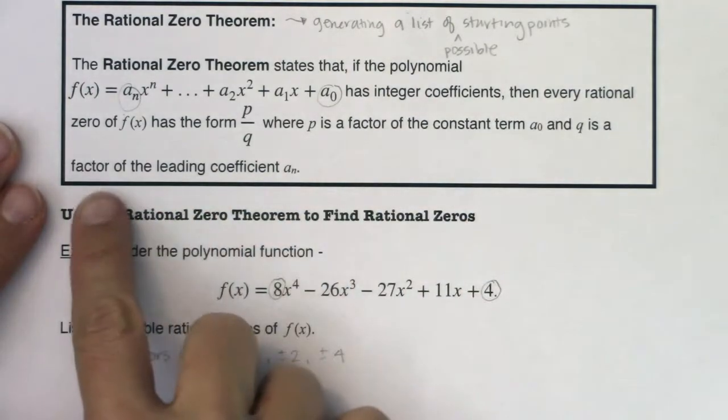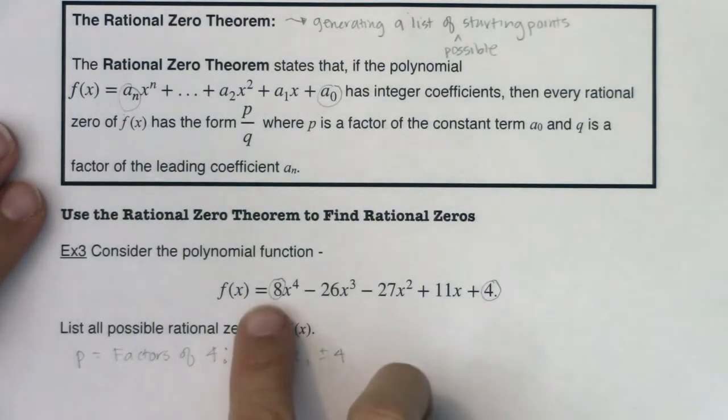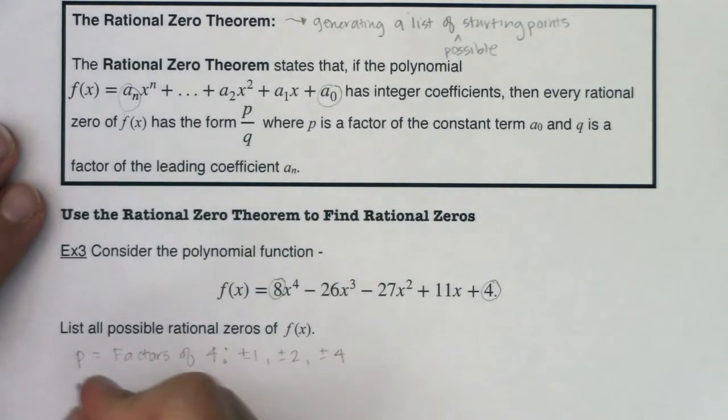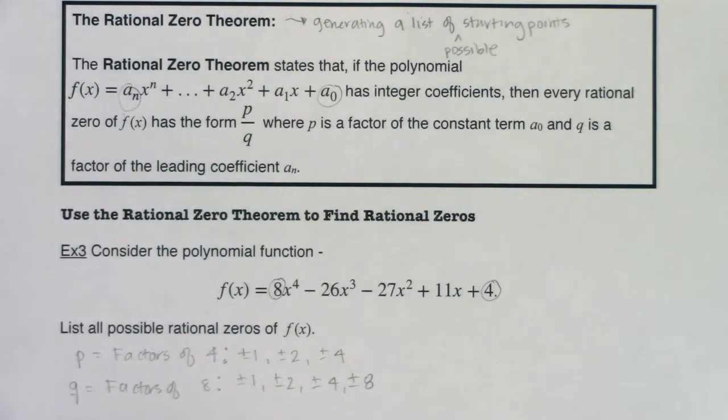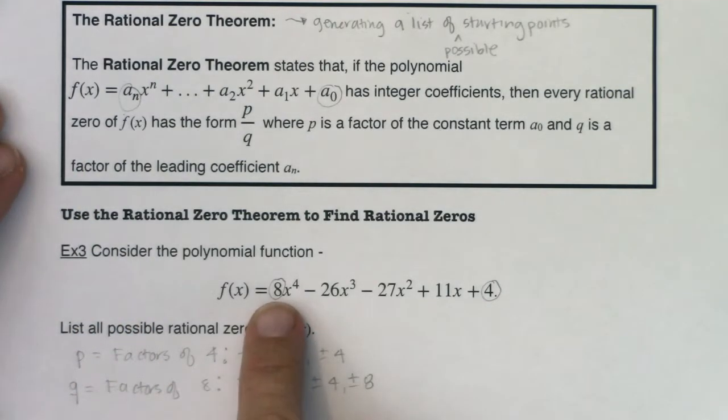Now in terms of q's, it's a factor of the leading coefficient. And the leading coefficient in this case is 8. So my q's are always a factor of my leading coefficient. So what divides nicely into 8? Well, 1, 2, 4, and then 8. All right. So this is helping us generate this list of possible zeros. And not all of these work. It's impossible for all of them to work because if you have a degree 4 polynomial, at most four of these are going to work. So we're going to get a lot of answers or a lot of possible zeros that don't actually pan out.